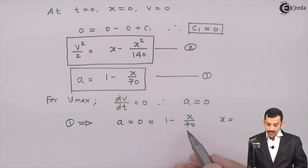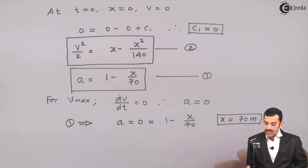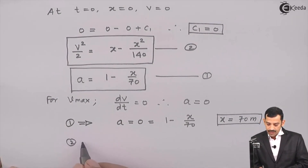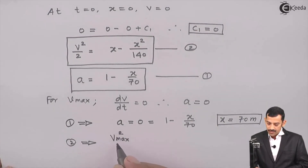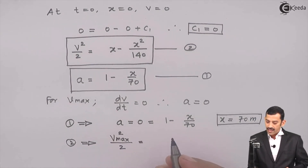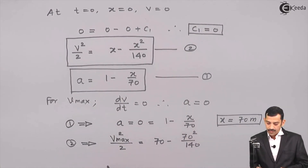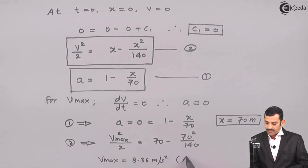Setting 1 - x/70 = 0 gives x = 70 meters. At this position, acceleration is 0 and velocity is maximum. Substituting x = 70 meters into equation 2: v_max²/2 = 70 - 70²/140 = 70 - 35 = 35. Therefore v_max comes out to be 8.36 meters per second. This is the final answer.